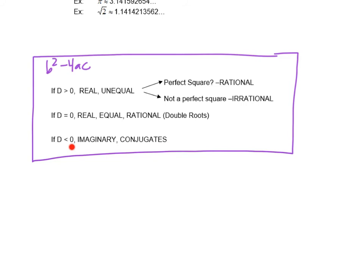If d is less than 0, that means that we have imaginary roots, and they are conjugates. So, imaginary, let's say it's 5 plus 2i. A conjugate to that would be the same imaginary number but with a minus sign, so 5 minus 2i.